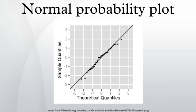The normal probability plot is a graphical technique to identify substantive departures from normality. This includes identifying outliers, skewness, kurtosis, a need for transformations, and mixtures.